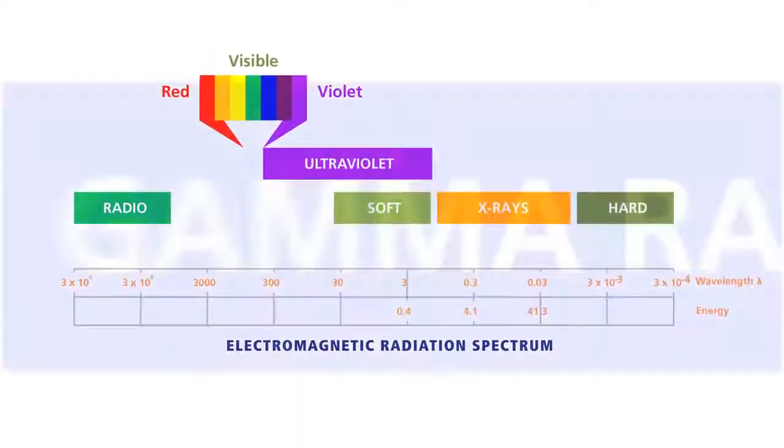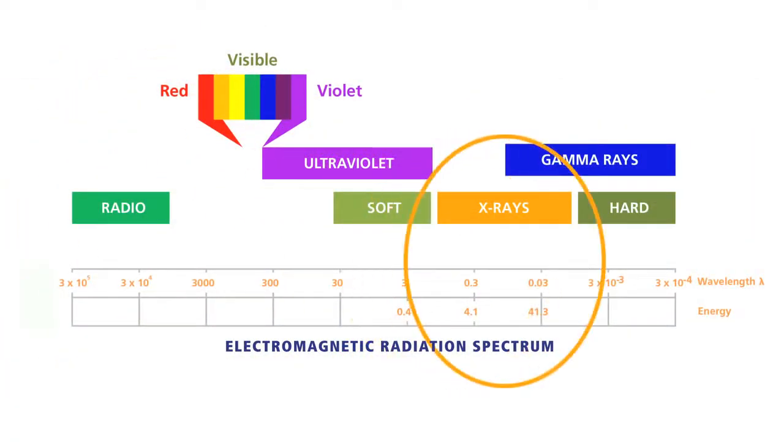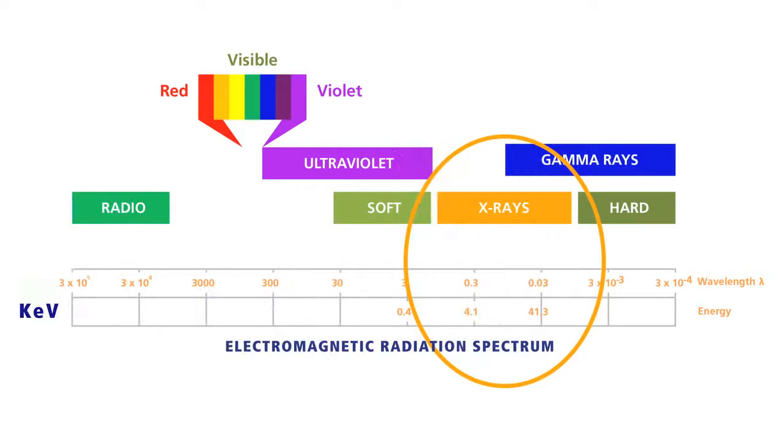X-rays form part of the electromagnetic spectrum. They are on the high energy side of ultraviolet and are expressed in terms of their energy or wavelength.